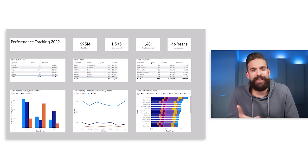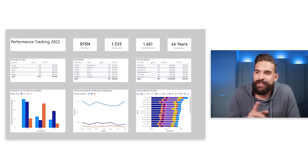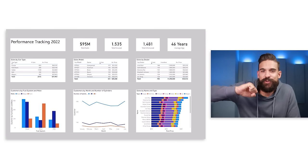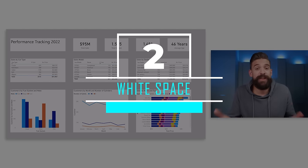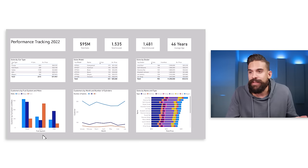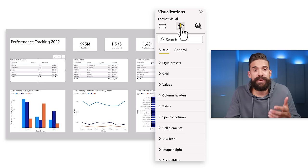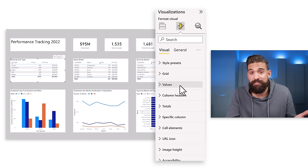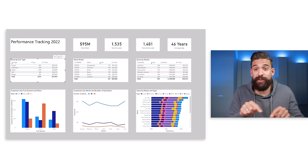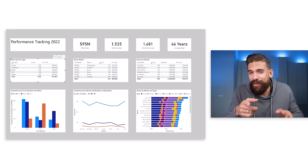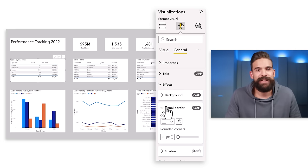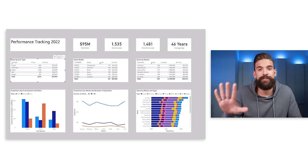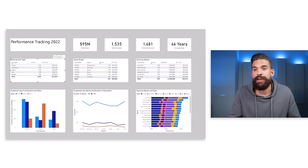That already looks much more organized, however still not mind-blowing. Step two is working with white space. The titles of each visual are very squeezed to the border, which is not great — we want white space around the main visual and between visuals. You might think there's a padding or margin option in formatting, but there isn't. You might also think of putting a border in the same color, but you can't control the border thickness. So instead, we put a white shape behind the visual to create space around it.